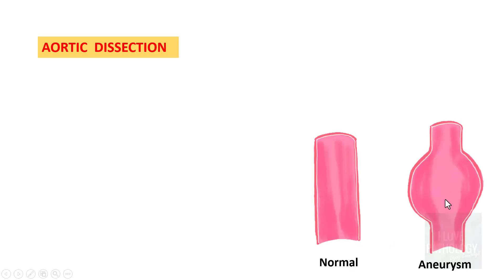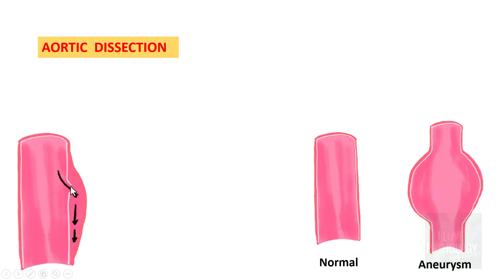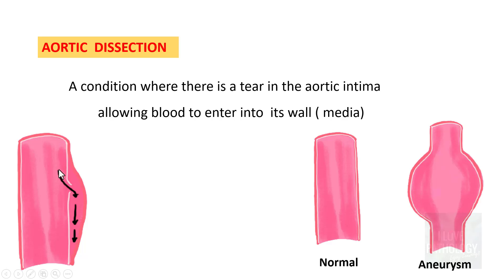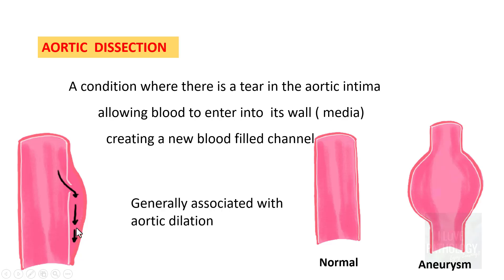So what is aortic dissection? Consider that this is a normal aorta, and that's the aneurysmal dilatation of the aorta — and this is the dissection. Aortic dissection is a condition where there is a tear in the aortic intima which allows blood to enter into its wall, the tunica media, thus creating a new blood-filled channel. Though it is called dissecting aneurysm, it's actually a misnomer because it is a form of hematoma formed within the wall of the aorta.